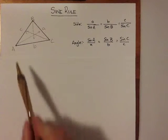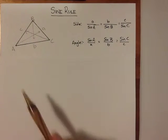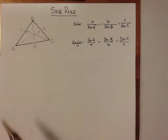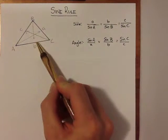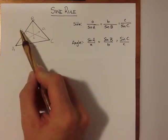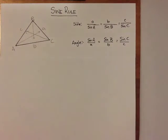In triangle ABC, side A is opposite angle A, and side B is opposite angle B, and side C is opposite angle C.